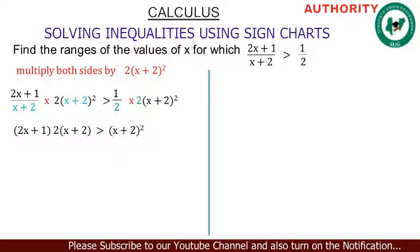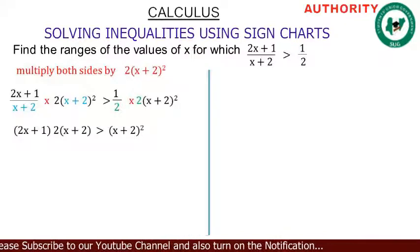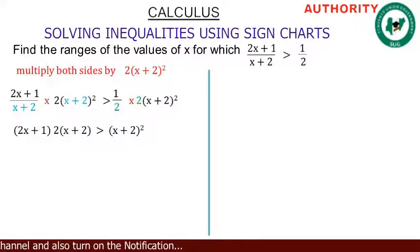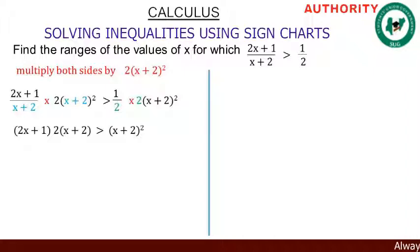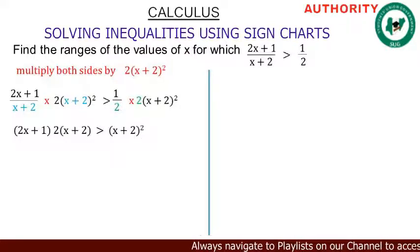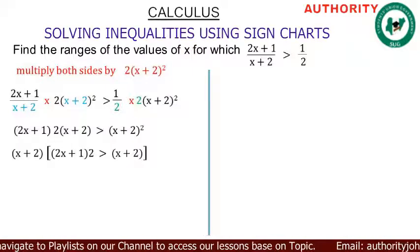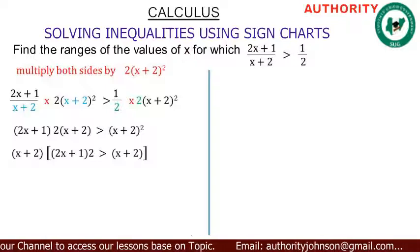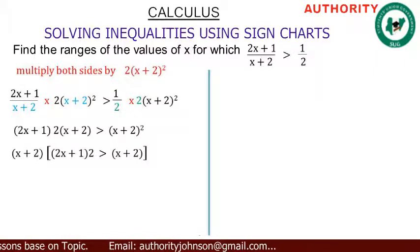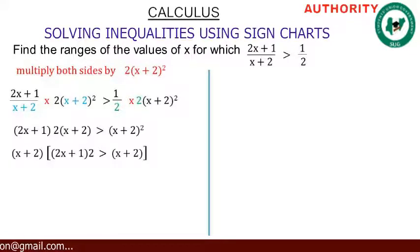Please don't multiply anything out. What we're going to do is factorize. Look at the expression on the left hand side and the right hand side — what do they have in common? You'll discover that we have (x + 2) on the left and also (x + 2) on the right. So we're going to factor out (x + 2) from both sides. Factoring out (x + 2) from the left leaves (2x + 1) · 2 in bracket, and from the right leaves (x + 2).